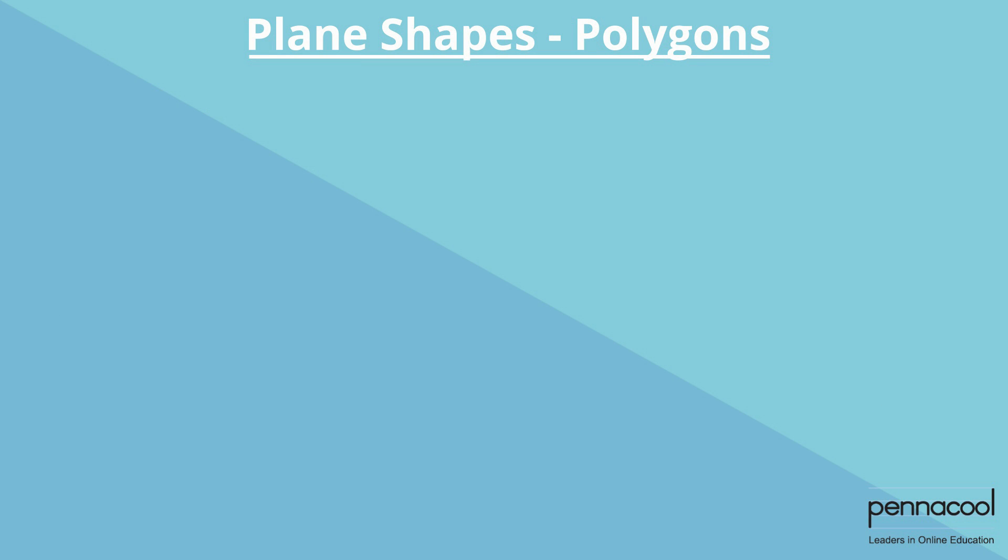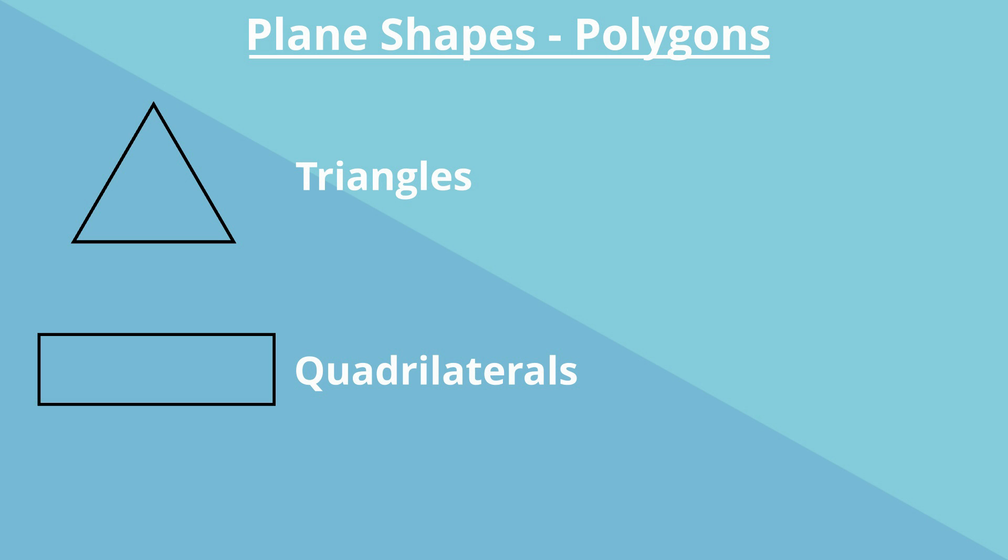Polygons are placed into groups based on the number of sides they have. All three-sided polygons are called triangles. Four-sided polygons are called quadrilaterals and five-sided polygons are called pentagons.